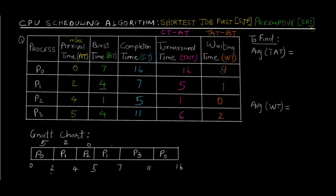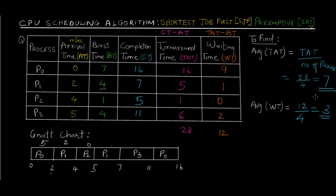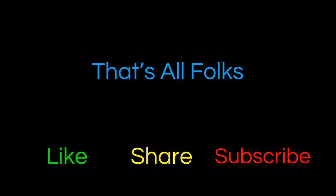Now take the totals: total waiting time = 9+1+0+2 = 12, and total turnaround time = 16+5+1+6 = 28. Average turnaround time = 28 ÷ 4 = 7 milliseconds. Average waiting time = 12 ÷ 4 = 3 milliseconds. This is how the CPU scheduling algorithm works for Shortest Job First with preemption — you just check the remaining time every time a new process enters the queue. If you liked this video, give it a thumbs up and share it. Thanks for watching!